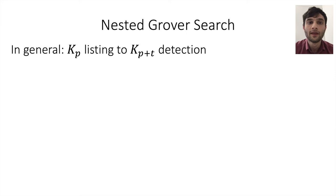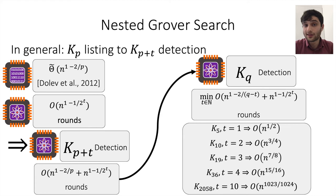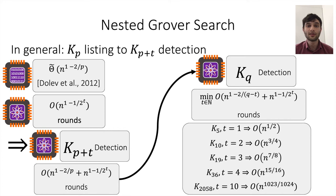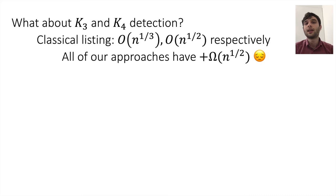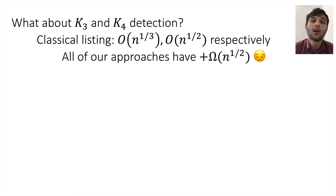In general, it becomes rather technical, but we can show how to extend listing of cliques of a given size to detection of cliques of any larger size. Working out the math, for example, if one wants to detect cliques of size 2058, they should list cliques of size 2048 and then extend by 10, which gives the best round complexity using our algorithms. Our current algorithms improve K(P) detection for all cliques of size five and up. However, we don't improve detection of cliques of size three and four — triangles and K4 — because those approaches require at least √n additional rounds for the Grover search, but listing triangles and K4 already takes less than that classically.